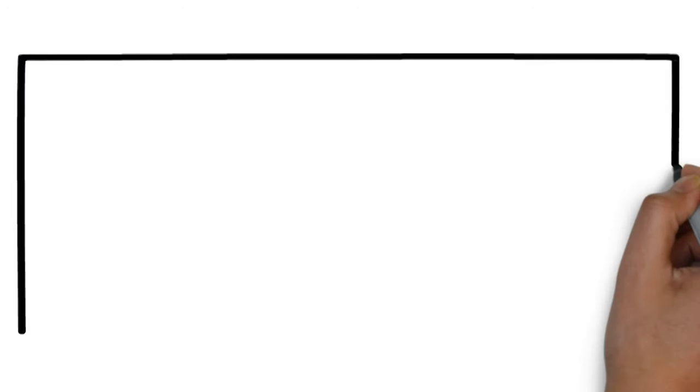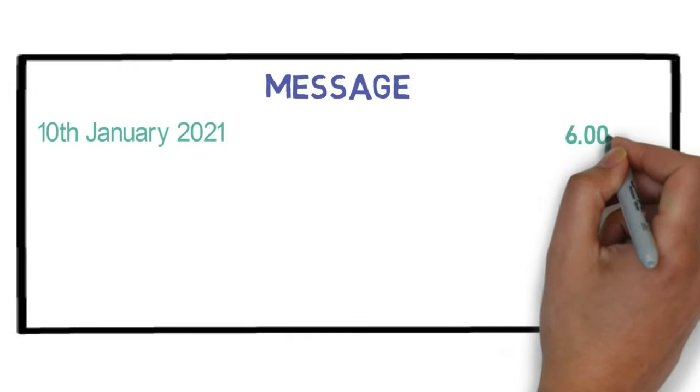Step 1. Create a rectangular box and write in top middle message. Step 2. Let's write in the next line in the left hand corner today's date which is 10th January 2021 and time which is 6 pm. Step 3. Let's write the name of the person for whom the message is written. Nilesh.